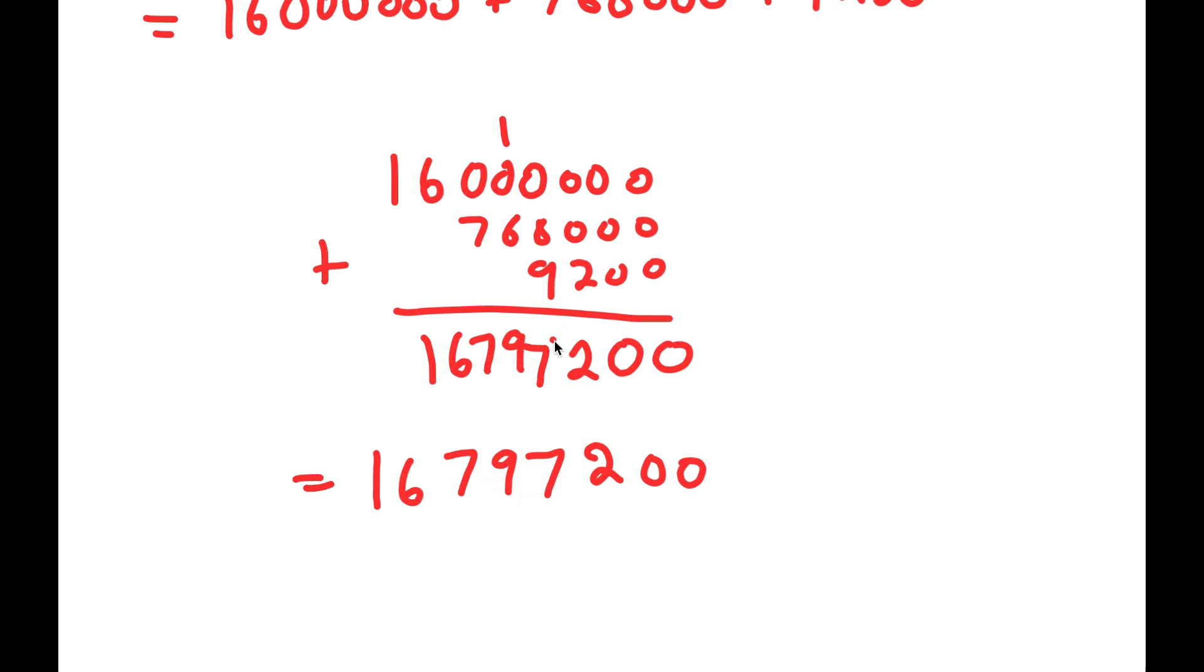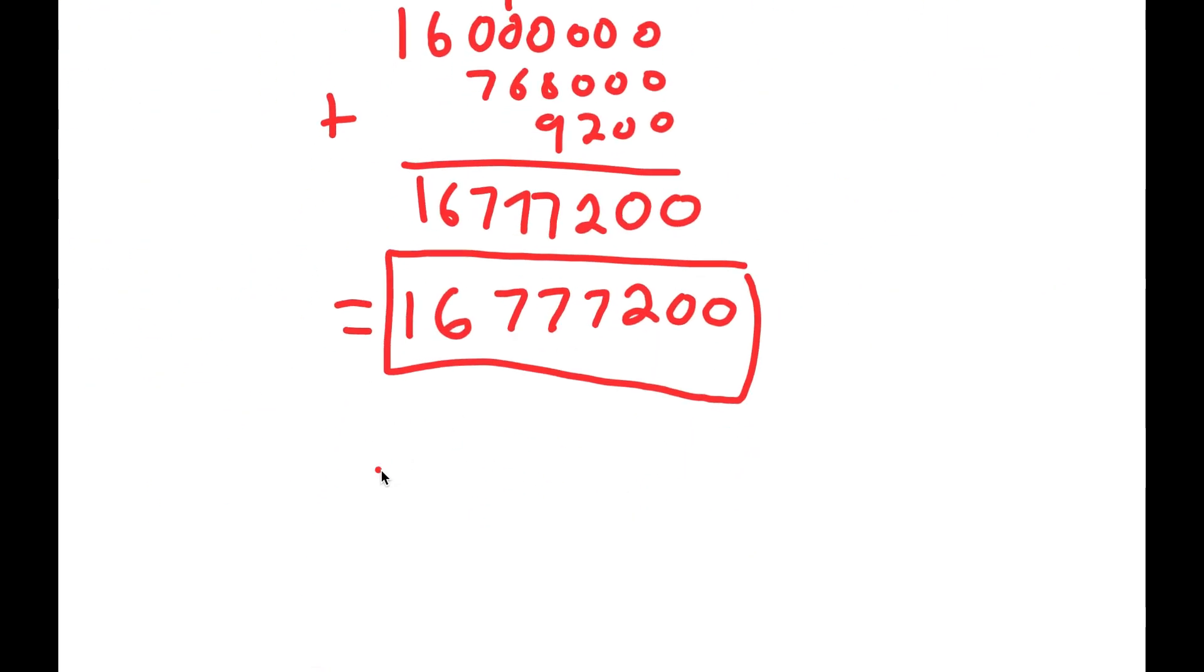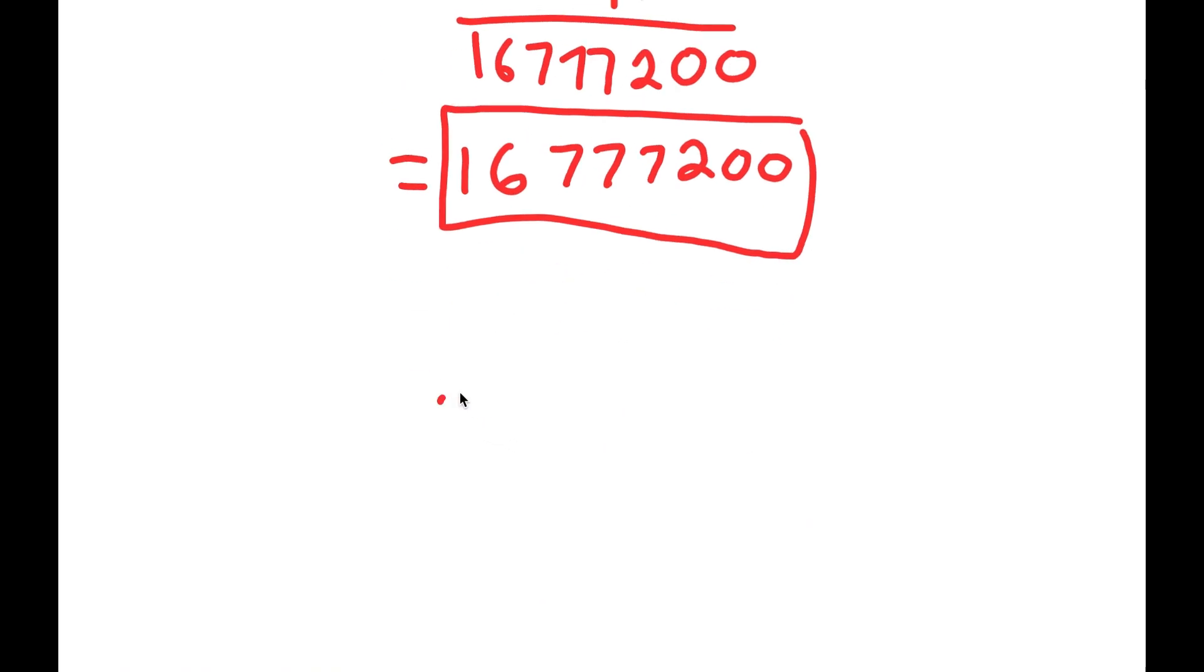So this is actually a 6. So this should be carry the 1, 6 plus 1, which is 7. So I get 16,777,200. So this is my answer to 500 squared. Sorry, I messed up. It's my answer to 2 to the power of 24 minus 16. So this is my answer.